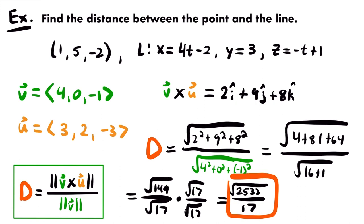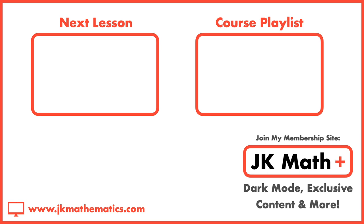That answer would also have been acceptable as √149/√17, but √2533/17 is a bit nicer. The approximate value is about 2.96. So √2533/17 is the distance between this line and this point. That's how you find the distance between a point and a line. And with that, this was the last example for this video. If you want more examples, they're available on my membership site. If you have any questions, feel free to leave them in the comments. I'll see you next time.